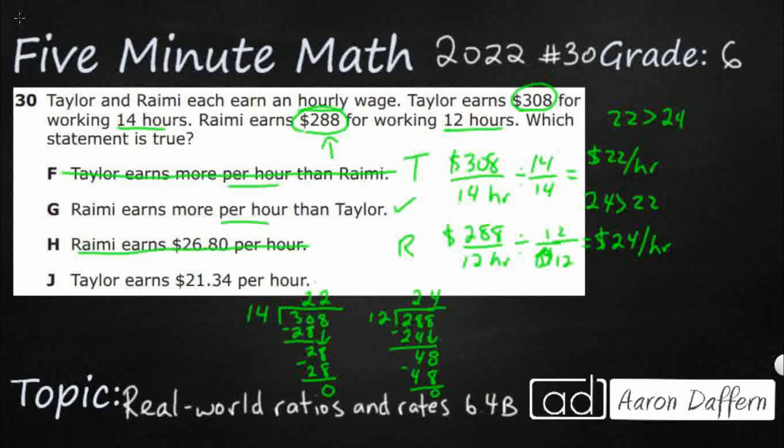And then Taylor, I don't know where this is coming from. This is just poor division. Maybe we're not using the algorithm correctly. But, no, we've got nice even numbers of $22 an hour for Taylor, $24 an hour for Ramey. Ramey makes more. So, our answer is G.